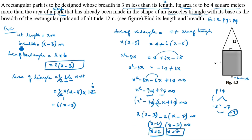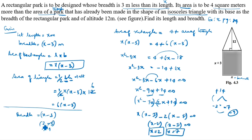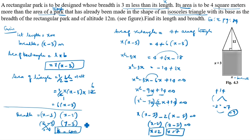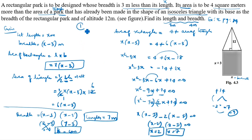Now we check the values. Breadth is x minus 3. If x equals 2, breadth is 2 minus 3 equals minus 1, which is not valid. So we substitute x equals 7: breadth equals 7 minus 3 equals 4 meters. Therefore x equals 7 is the only applicable value. Length is equal to 7 meters and breadth is 4 meters. This is the first method.